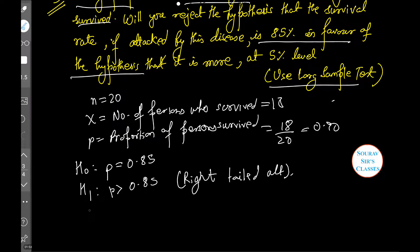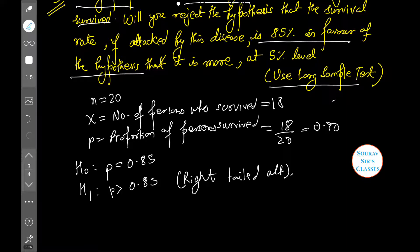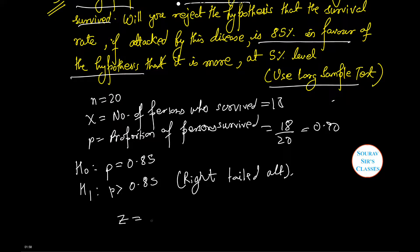Thus, the test statistic under H₀ can be stated as z equals small p minus capital P divided by root pq by n, which equals 0.90 minus 0.85 by root over 0.85 into 0.15 by 20, which equals 0.05 divided by 0.06.